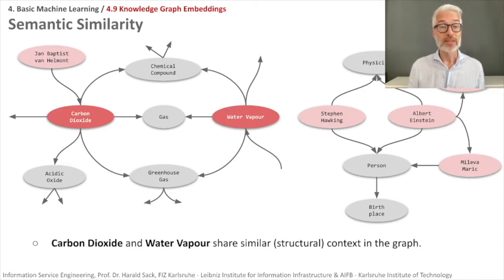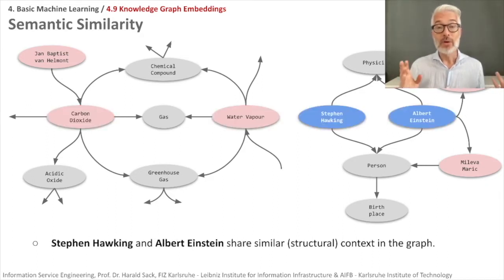The greenhouse gases share a number of properties. They share that both are a gas, both are a chemical compound. They might also have some differences, so they are not exactly identical. However, they have something like a similar context, and this is exactly the same for our physicists. Both of them are persons, both of them are physicists. Of course there are also differences; Albert Einstein was born in another city than Stephen Hawking.